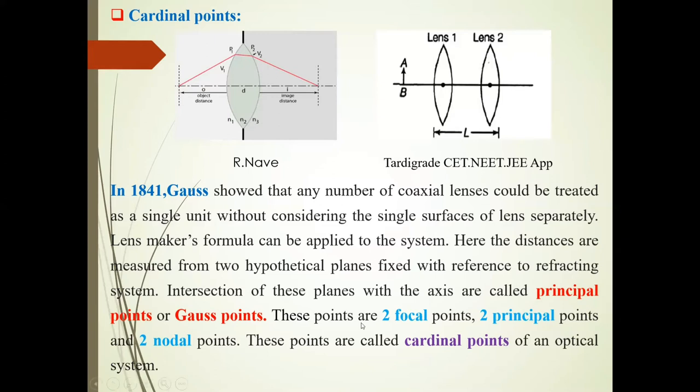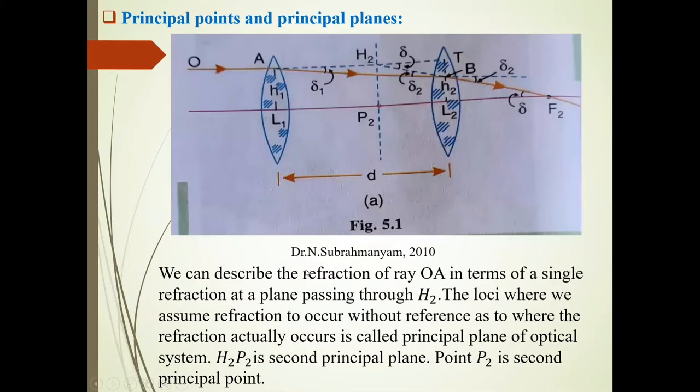These points are two focal points, two principal points, and two nodal points. In total, there are six points. These six points are called cardinal points of the optical system. In this presentation, we will only discuss principal points and principal planes.